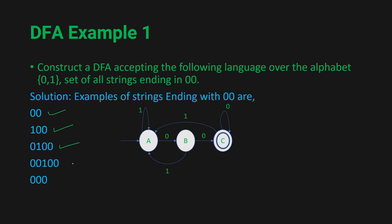For '00100': starting in state A, we get 0 and go to B, get another 0 and go to C, then get 1 and come back to A, then 0 to B, then another 0 to C — state C is final, so '00100' is accepted. For '000': from A, 0 to B, 0 to C, then another 0 keeps us in state C — still a final state, so '000' is also accepted.